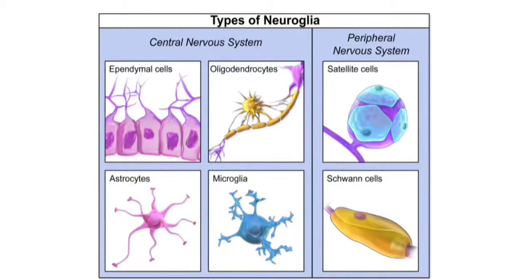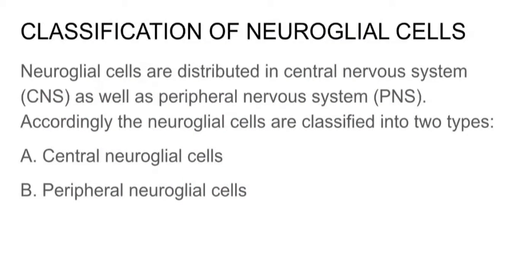As you can see the types of Neuroglia in the image. Classification of Neuroglia cells: Neuroglia cells are distributed in the central nervous system as well as the peripheral nervous system. Accordingly, the Neuroglia cells are classified into two types: central Neuroglia cells and peripheral Neuroglia cells.